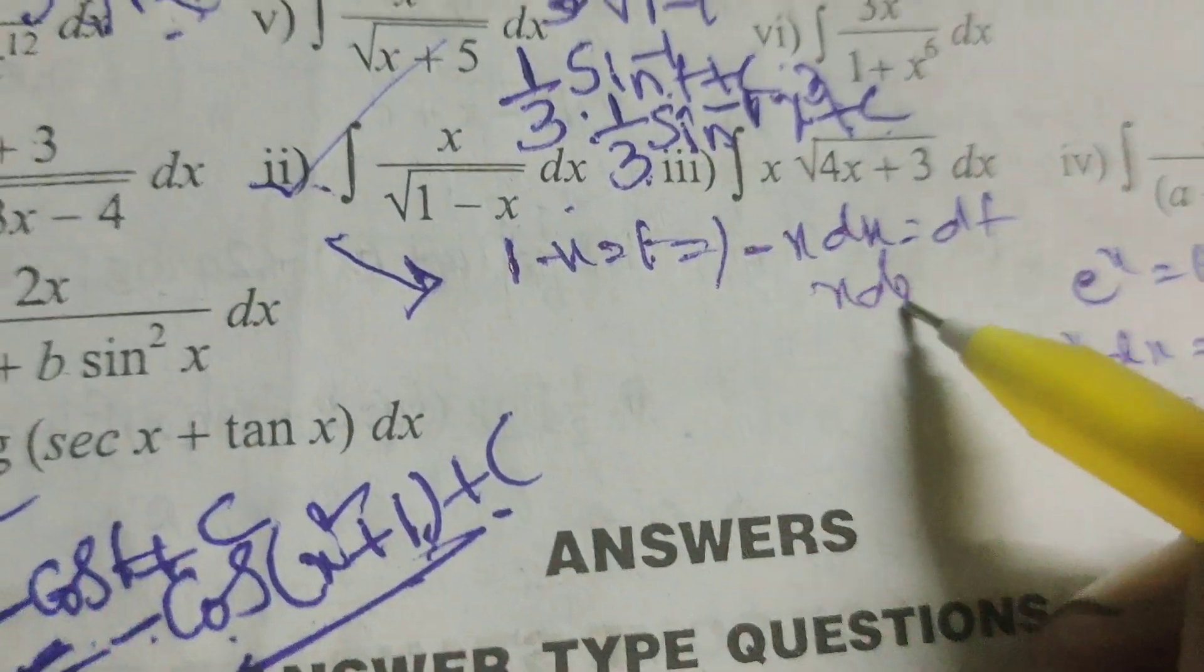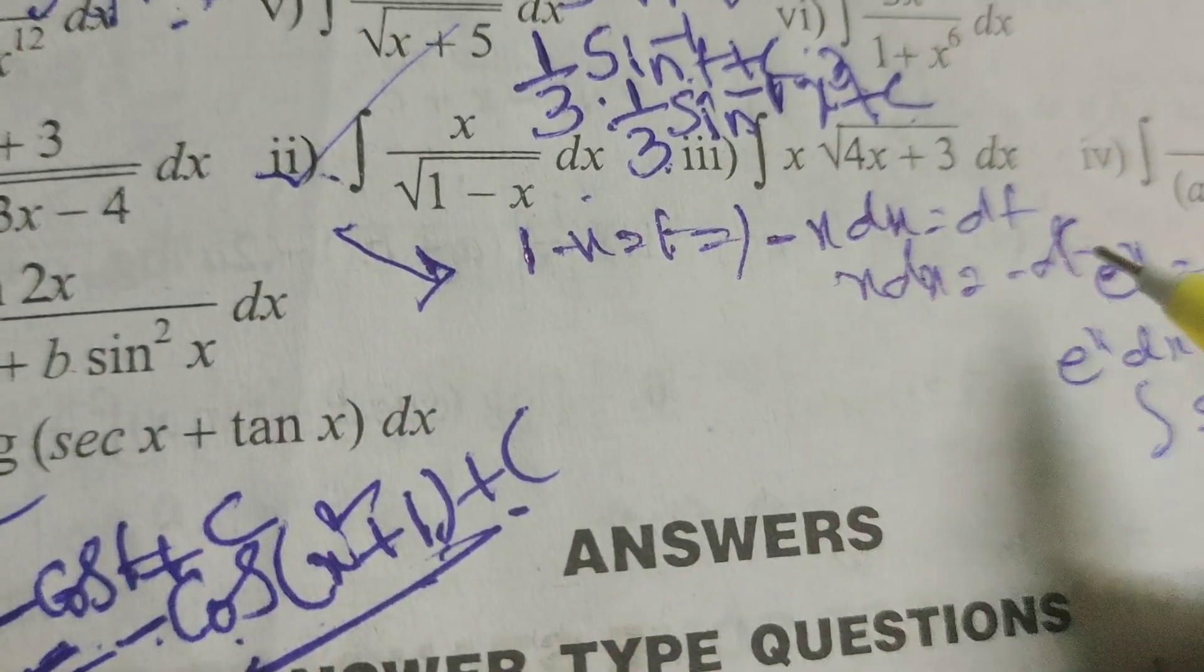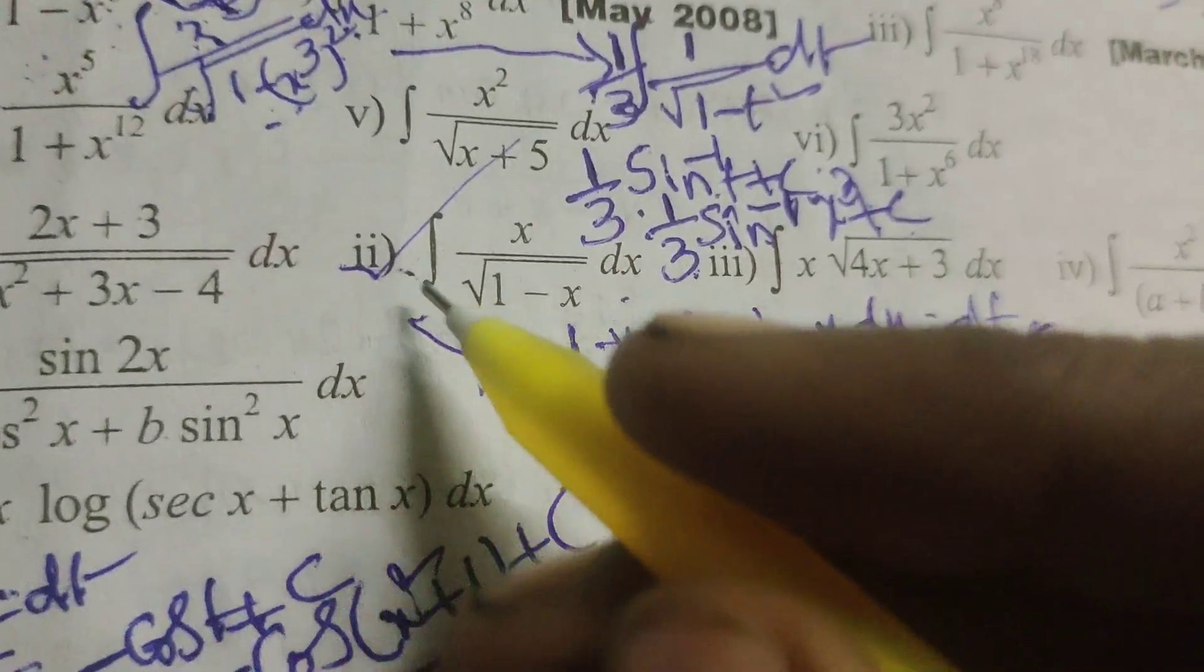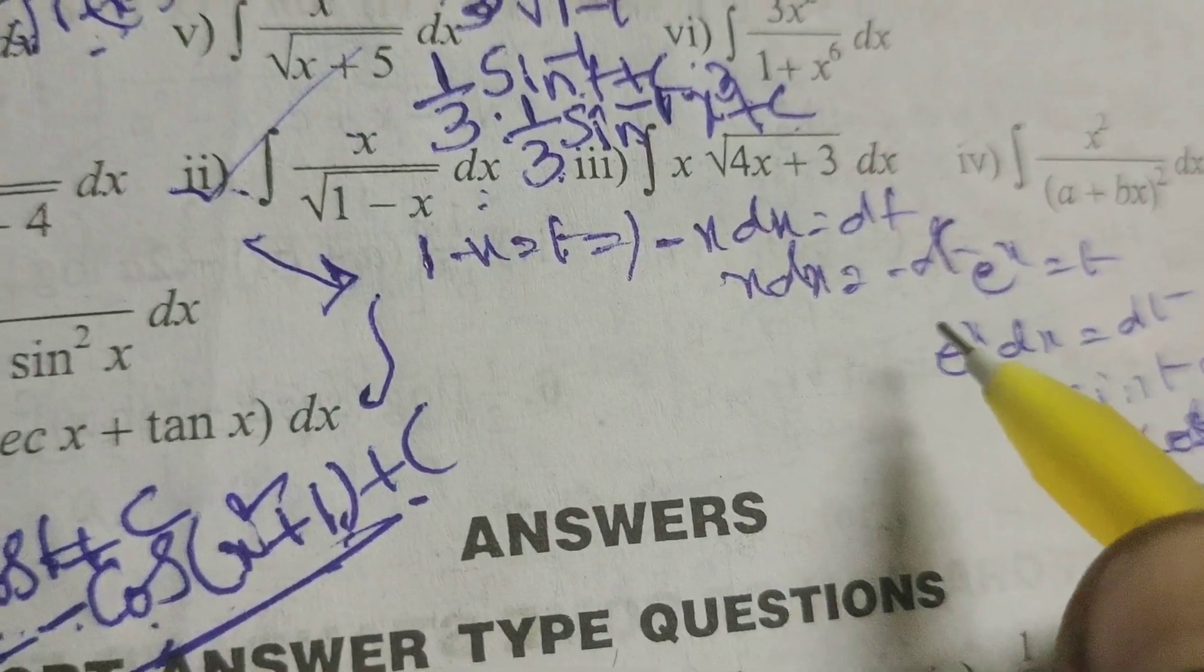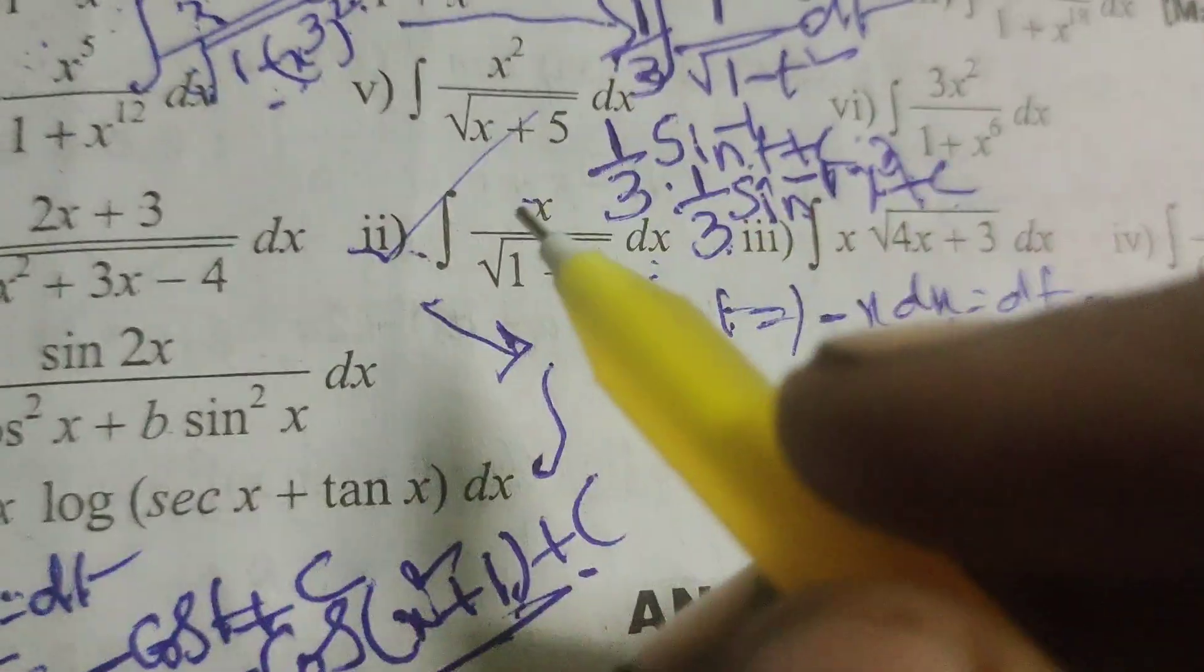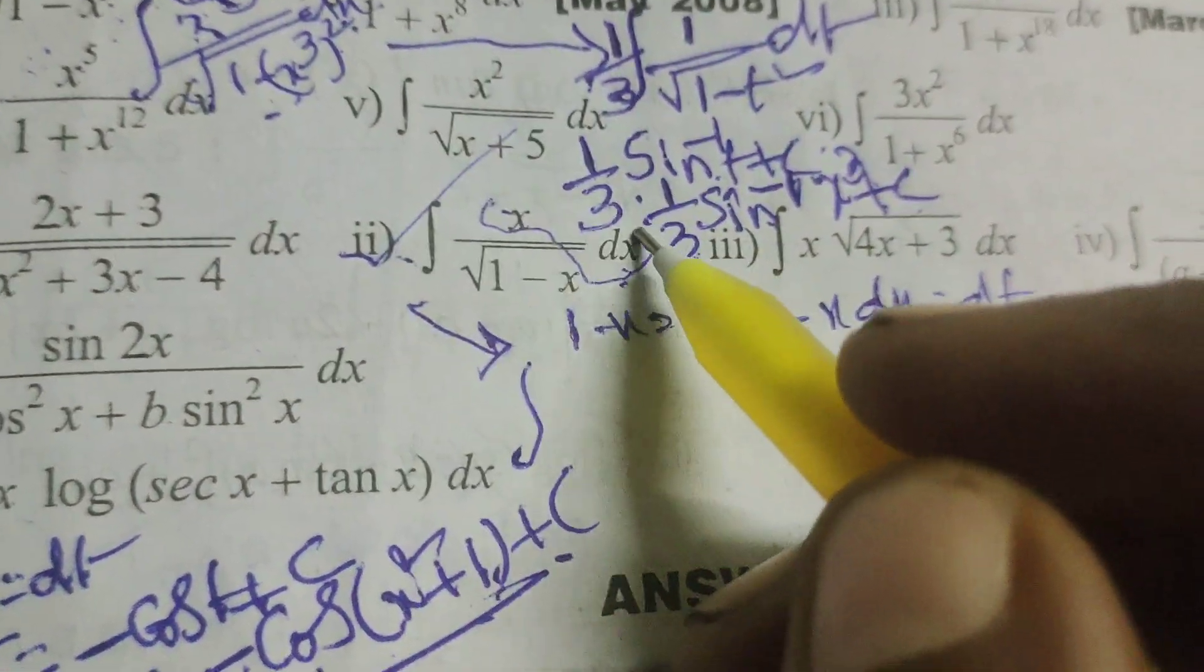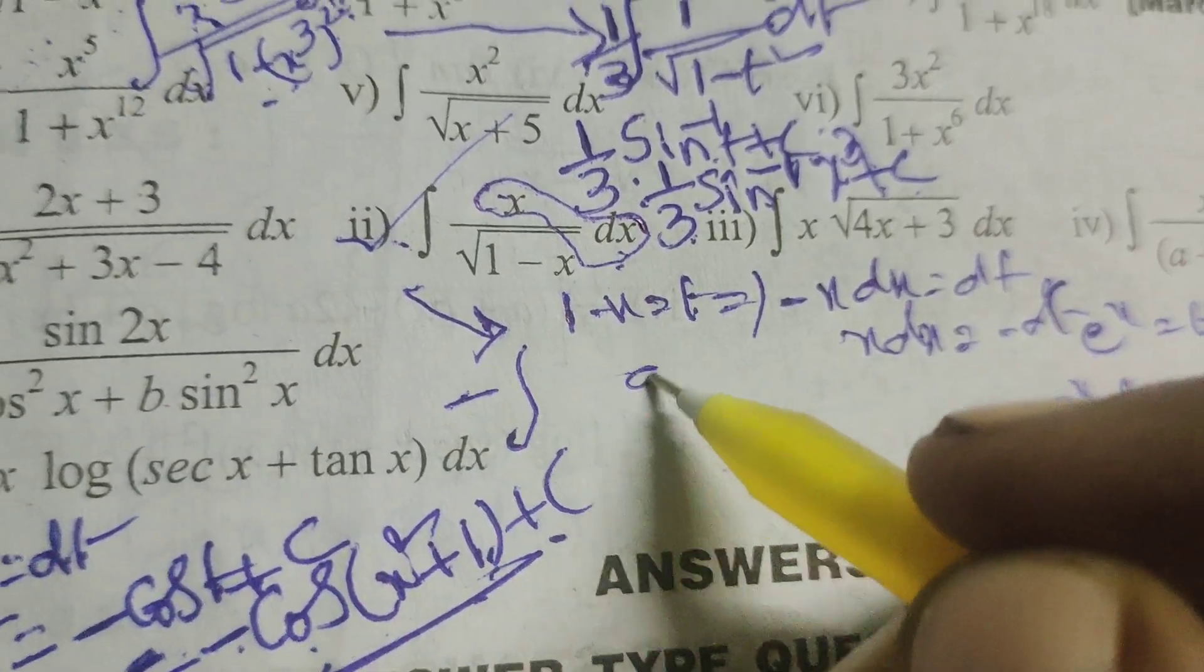x dx equals to minus dt. So in this integral problem write integral of x dx, means in place of x dx write minus dt.